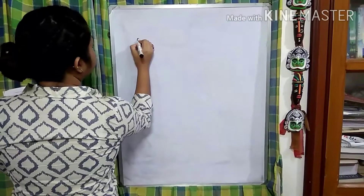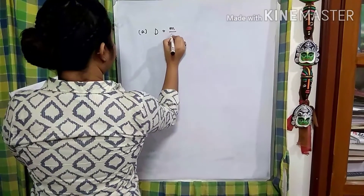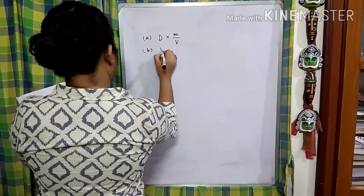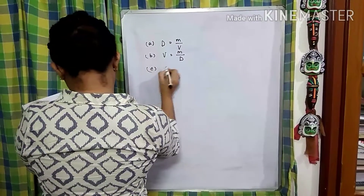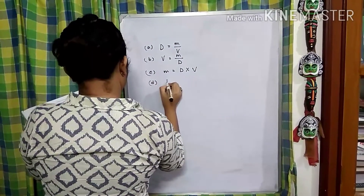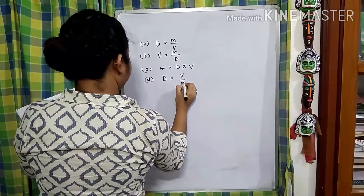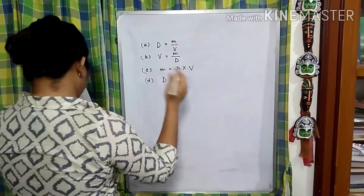Now here there are some tick-the-correct-options questions. Look at number 1: which of the following is the incorrect relation? I am going to use the board for your convenience. Option A is D equals M by V, option B is V equals M by D, option C is M equals D into V, and option D is D equals V by M. Among all these four, which is the wrong answer? We have to find out.